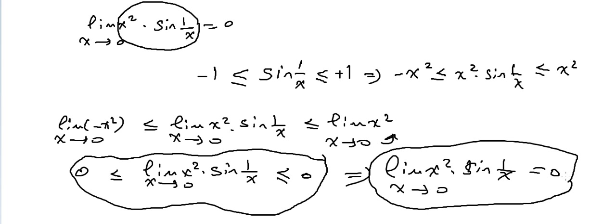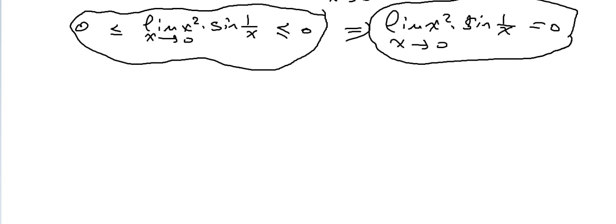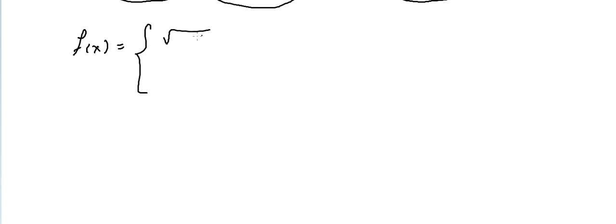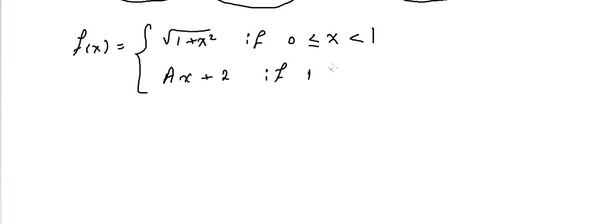We still have a little time, so let's do one more problem. Consider the piecewise function f(X) equal to the square root of (1 plus X squared) for 0 less than or equal to X less than 1, and equal to aX plus 2 for 1 less than or equal to X less than 2. We need to find the value of a such that the limit of f(X) as X approaches 1 exists.